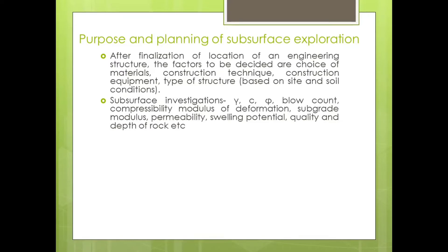What technical or engineering properties are we going to get using subsurface exploration? First is gamma — the bulk density of the soil which is under the surface. Then cohesiveness — C stands for cohesiveness. Phi is for angle of friction, the same concept from engineering mechanics. Then blow count — the number of blows required to find out the compressibility or consolidation of the soil.